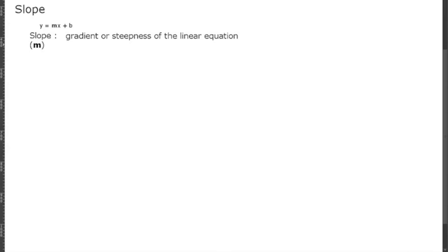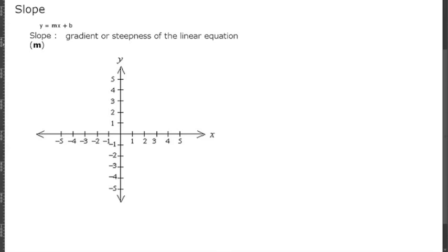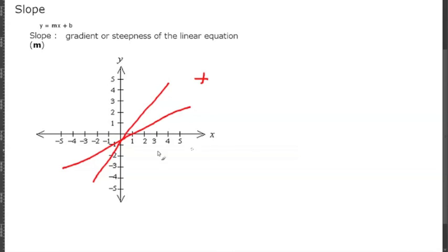That m value is the gradient or steepness of the linear equation. If you were looking at a grid and the line was something like this, that is going to have a different slope than a steeper line. These two lines are going to be positive slopes because as you get greater in the x direction, you're also getting greater in the y direction — moving up the line.